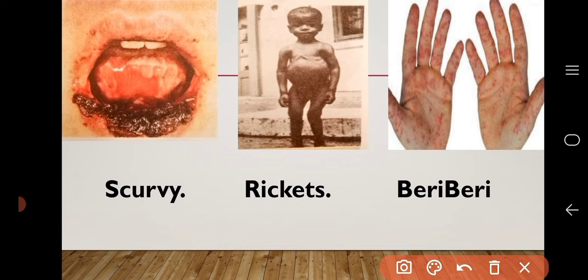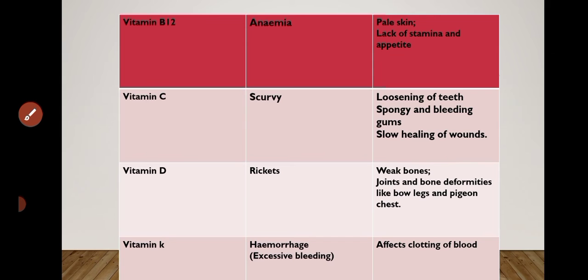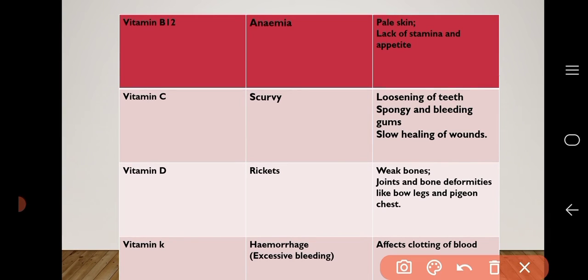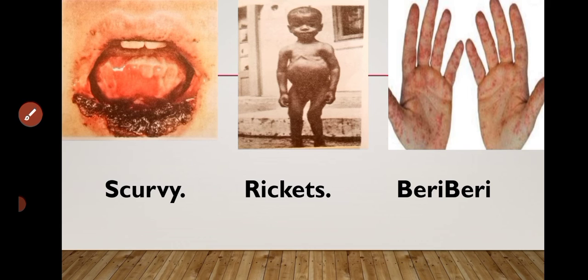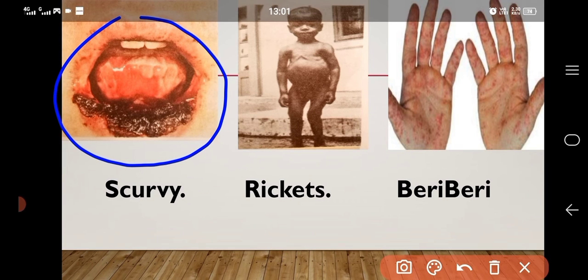Here you can see images of scurvy, rickets, and beriberi. Deficiency of vitamin B12 causes anemia; symptoms are lack of stamina, loss of appetite, and pale skin. Deficiency of vitamin C causes scurvy; symptoms are loosening of teeth, spongy and bleeding gums, and slow healing of wounds.